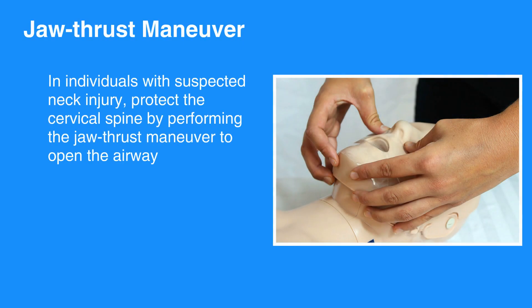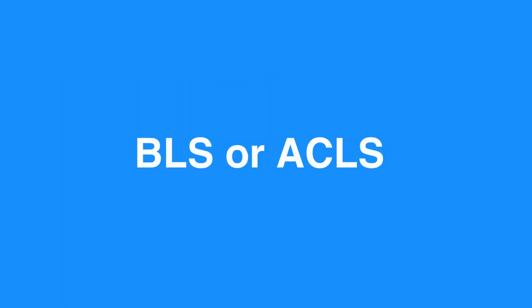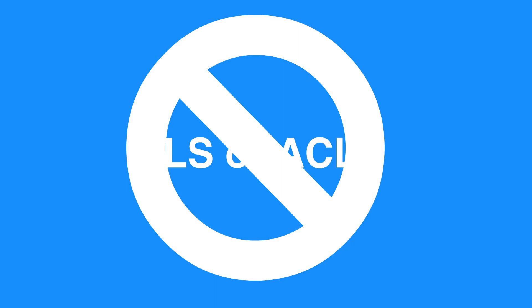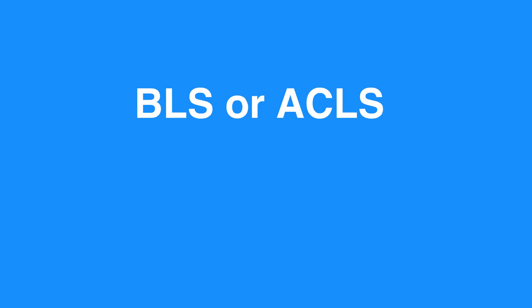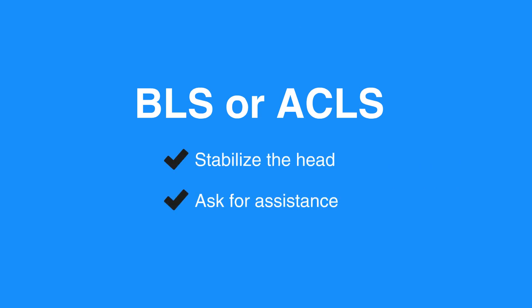In individuals with suspected neck injury, protect the cervical spine by performing the jaw thrust maneuver to open the airway. While standard practice in a suspected neck injury is to place a cervical collar, this should not be done in BLS or ACLS. Cervical collars can compress the airway and interfere with resuscitation efforts. As a provider, you must ensure an open airway regardless of the basic airway use. It is your responsibility to stabilize the head or ask for assistance while maintaining control of the airway.